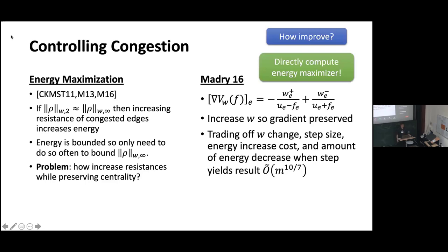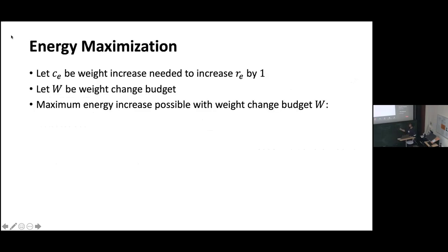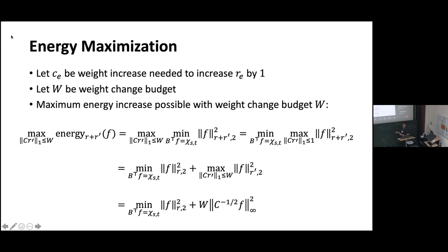How do we improve this? One natural idea: if the goal was to increase energy to control the L-infinity norm, we could directly compute the maximum change of weights to increase energy under some budget. We don't want weights to get too large for the analysis, so under some budget of weight change, we ask what we can do to energy and hope that optimality controls other congestion measures. We write down the optimization problem — with a budget based on the centrality argument — and check its dual. We get a weighted L2 plus weighted L-infinity flow problem on an undirected graph.